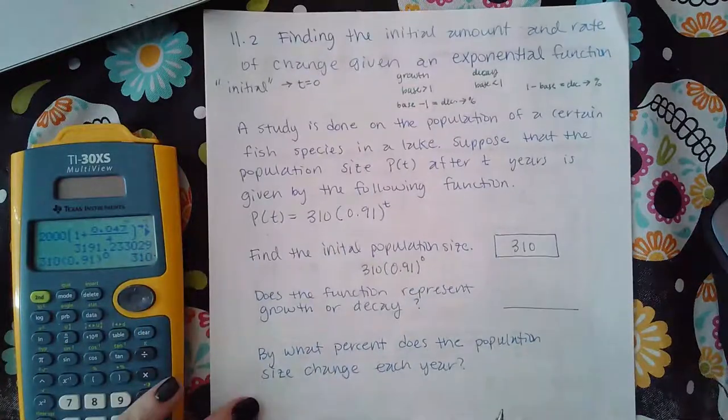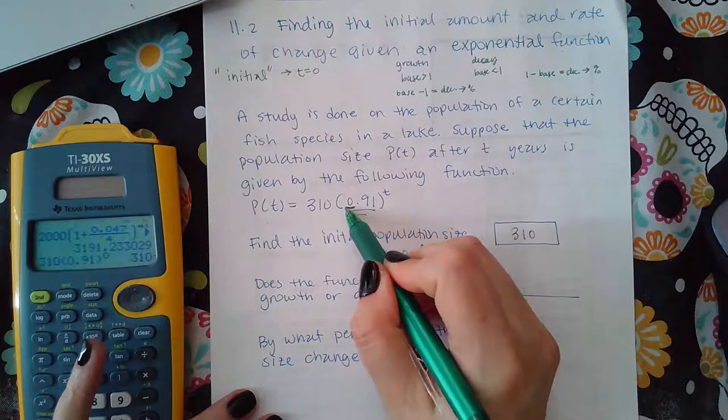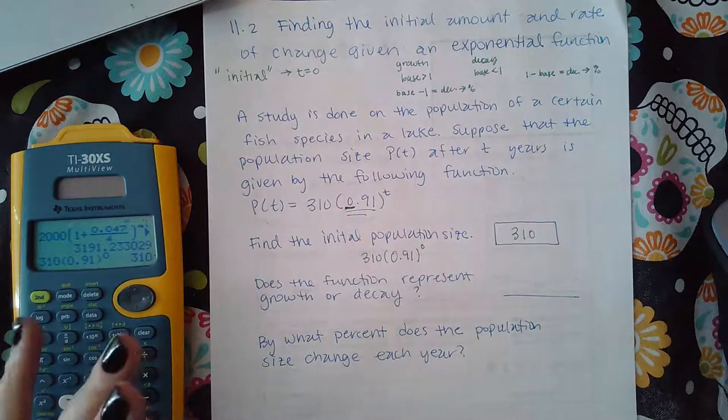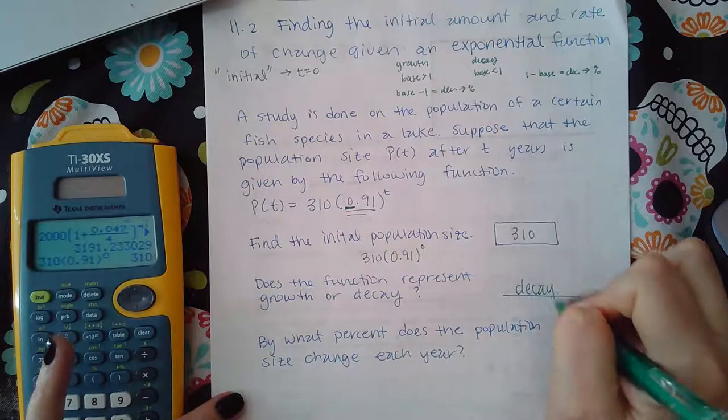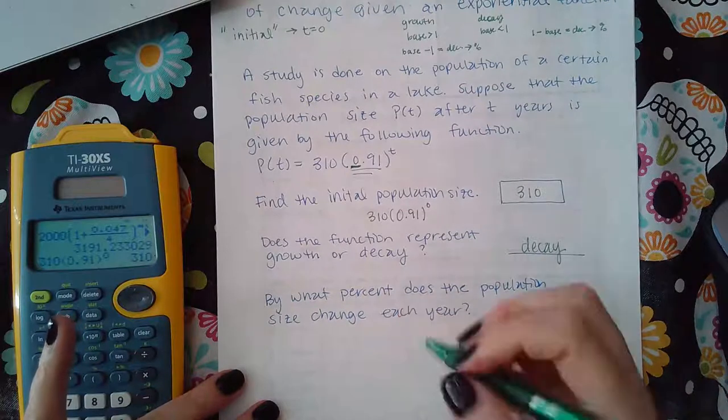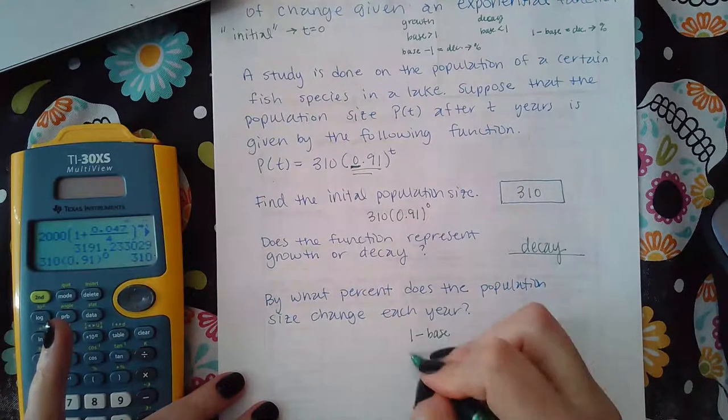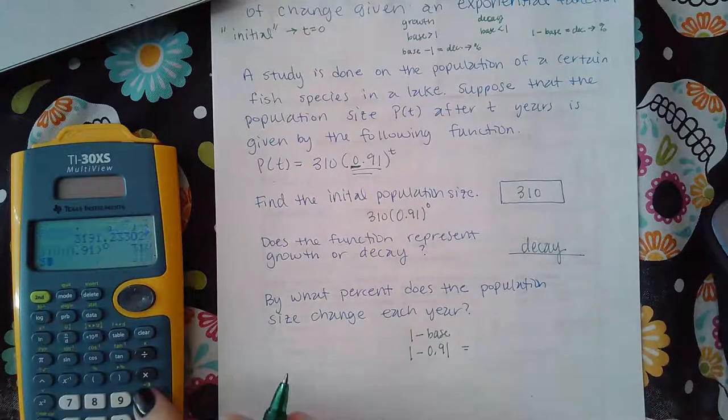Now does the function represent a growth or decay? Because this value is less than one, it's not one or more, it's less than one, then that means I have a decay problem. And if I have a decay problem, the way I find the change is I do one minus that base, so one minus 0.91, and that gives me 0.09.